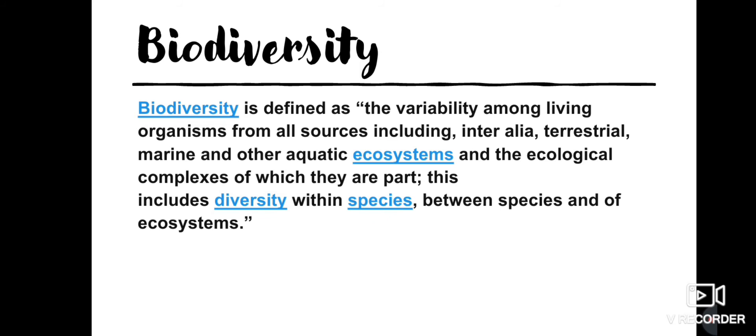Biodiversity is defined as the variability among living organisms from all sources, which includes the terrestrial, marine, and aquatic ecosystems, and the ecological complexes of which they are part — meaning the food chains and food webs. This includes the diversity within species, between species, and of ecosystems. It is the variety of life on earth, called biodiversity.